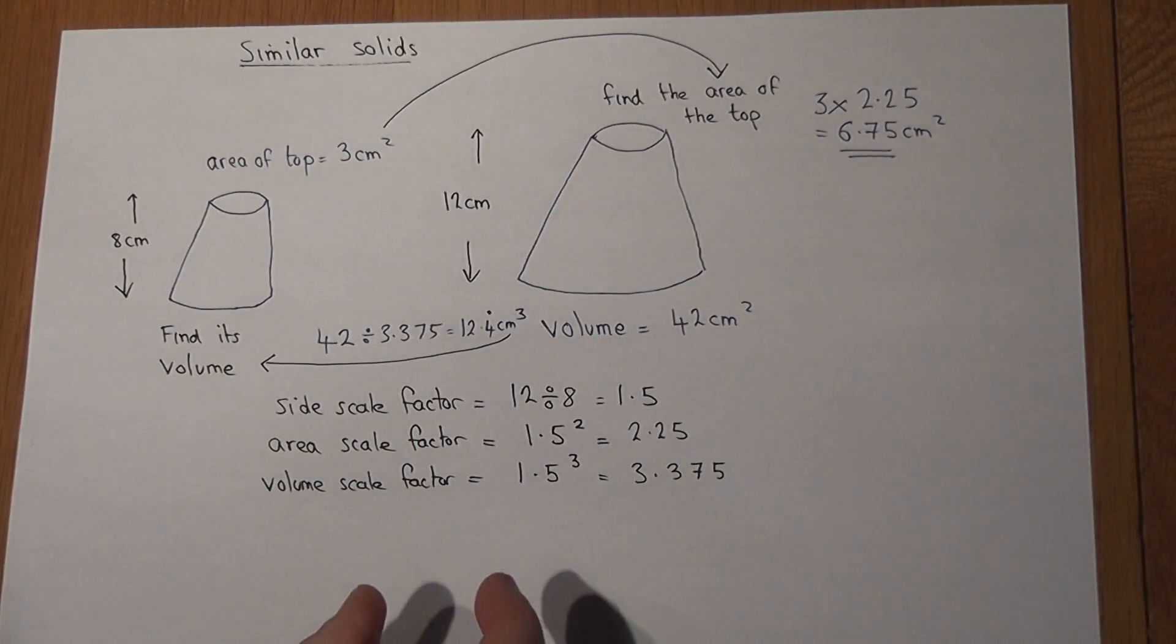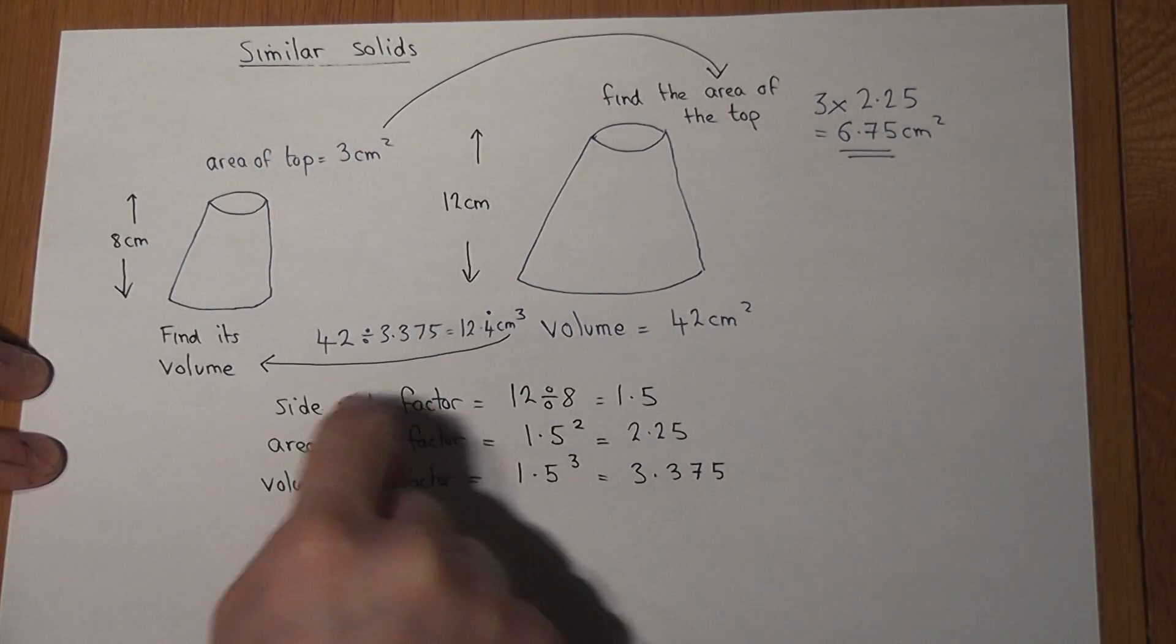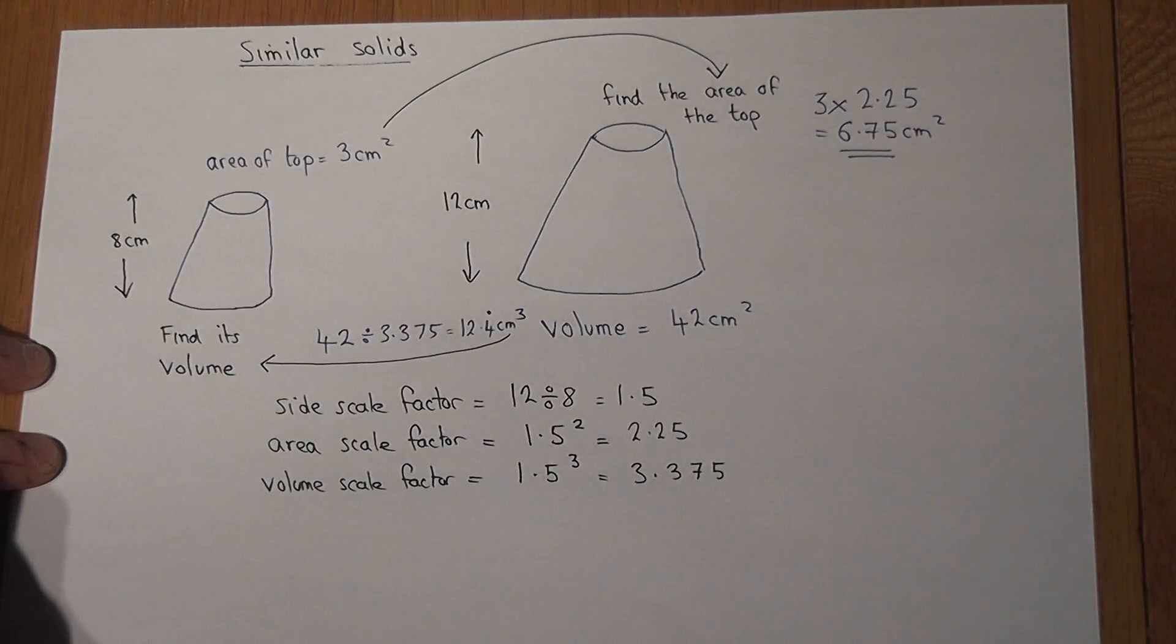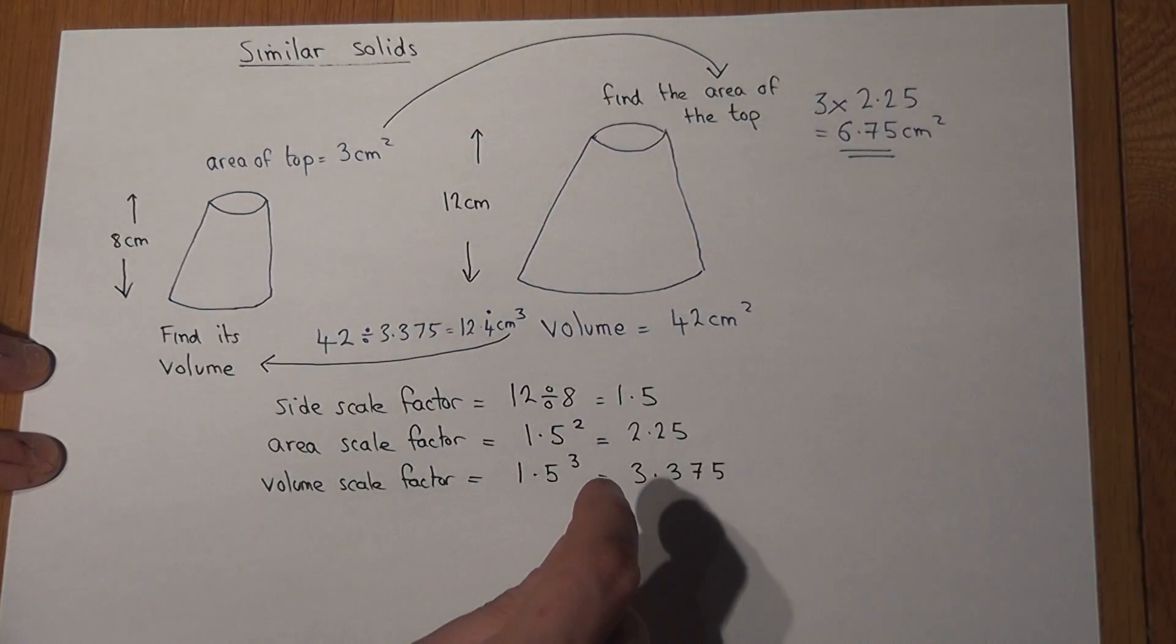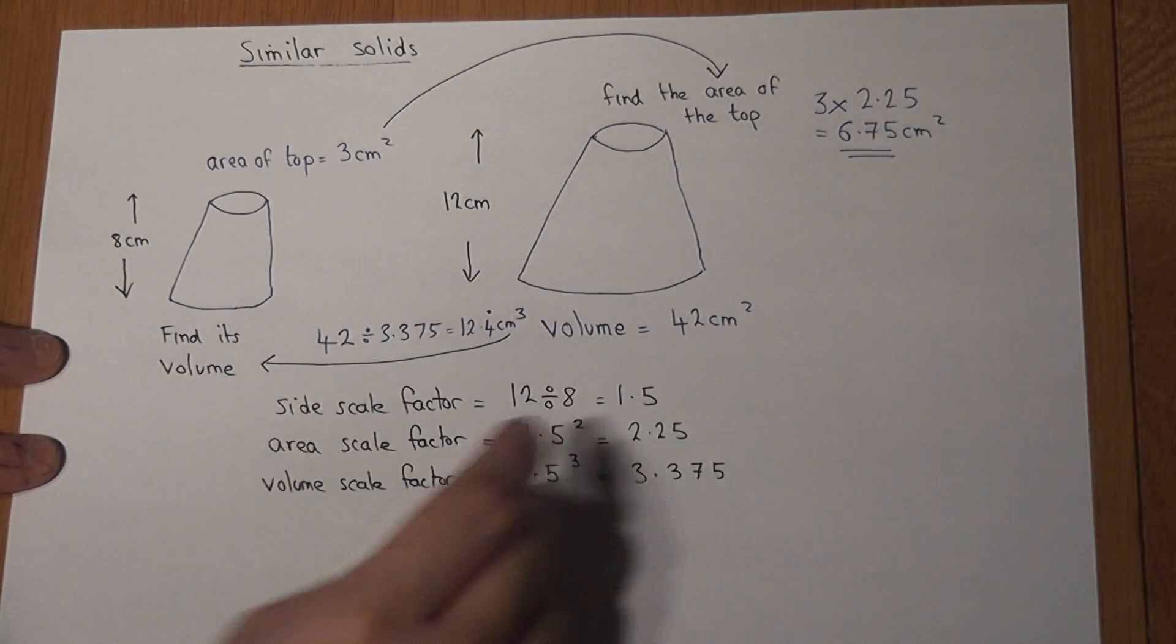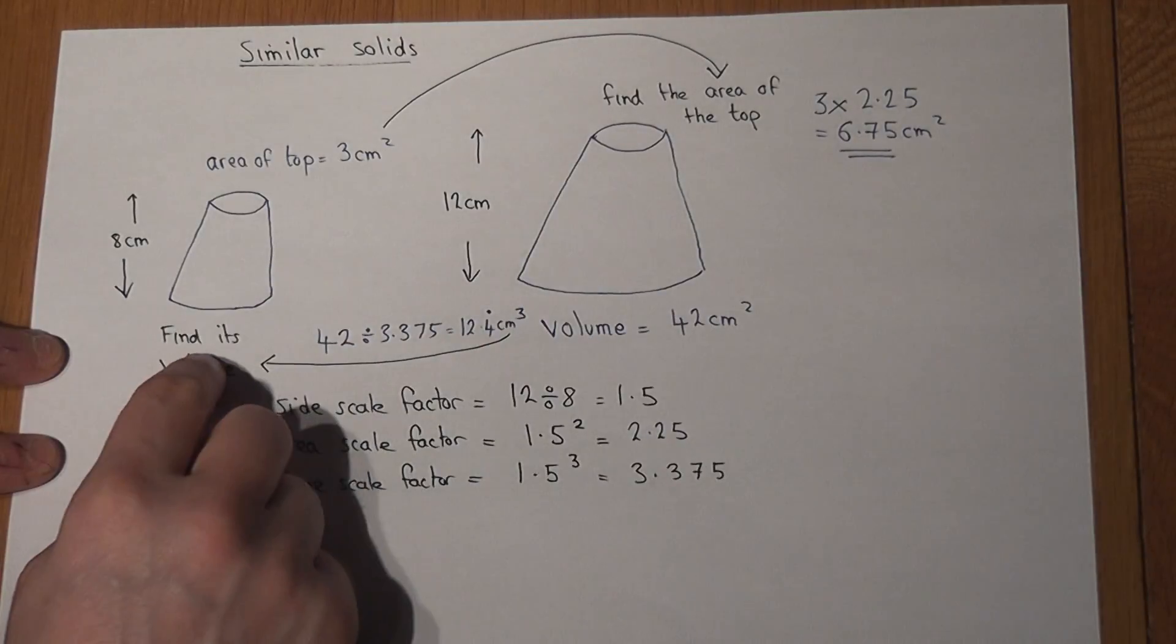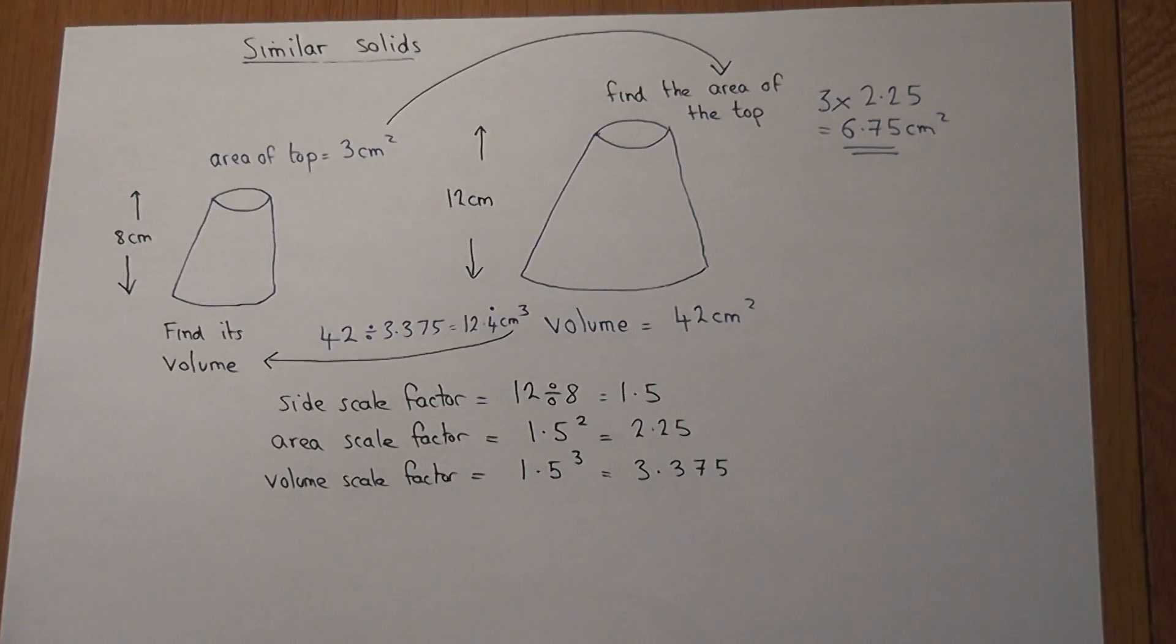So again, the key things here: I can use the sides to find the side scale factor - that's what we times or divide by. However, for area, we have to square the side scale factor. For volume, we have to cube it. If we're going from small to large, we times by the scale factor. If we go from large back to small, we divide by the scale factor.